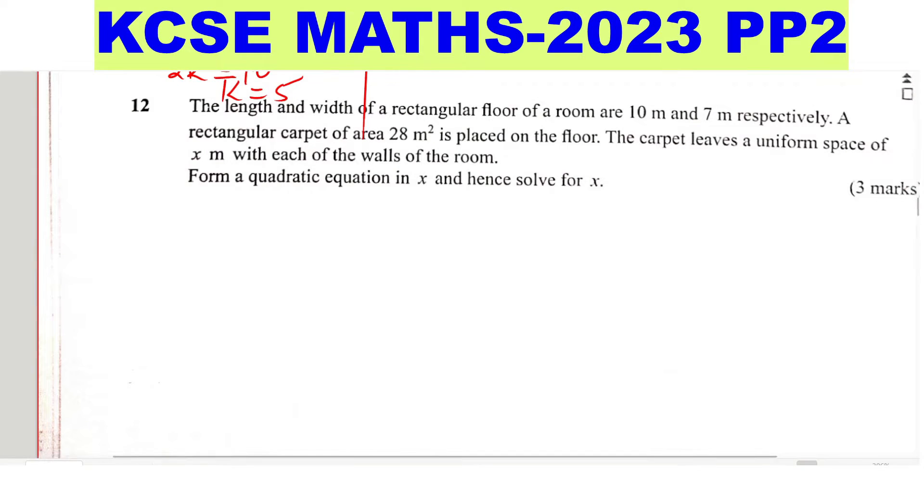Question 12. The length and width of a rectangular floor of a room are 10 meters and 7 meters respectively. A rectangular carpet of area 28 square meters is placed on the floor. The carpet leaves a uniform space of x meters with each of the walls of the room. Form a quadratic equation in x and hence solve for x.